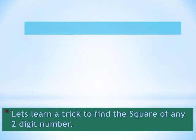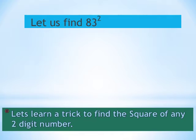So let us find the square of 83. First we will find the squares of both digits in the given number. 8, the square of 8 is 64 and the square of 3 is 9.